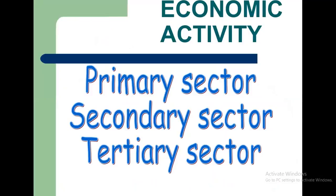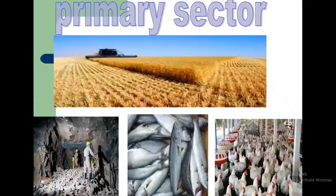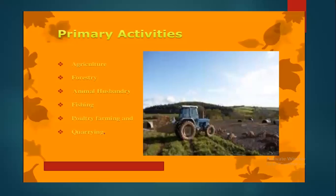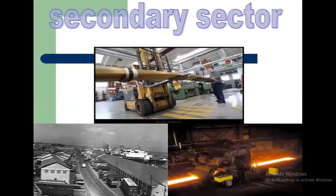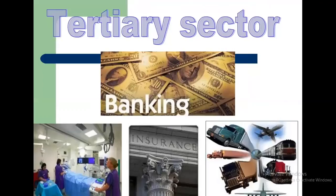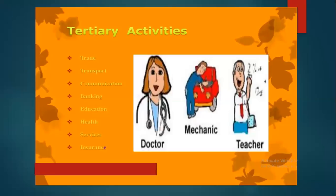Then we have seen economic activities like the primary sector, secondary sector, and tertiary sector. The primary sector takes the first step toward production using raw materials — agriculture, forestry, animal husbandry, fishing, and poultry farming are all primary activities. The secondary sector is where industries and factories take raw materials from the primary sector, refine them, package them, and make finished products that can be consumed. Then from there it goes to the tertiary sector — transportation, banking, communication, insurance, education, health, and services — which is also called the service sector because they are giving service to others.